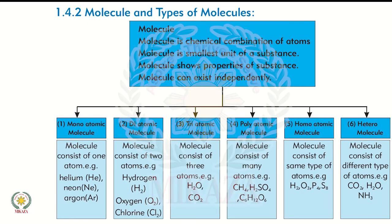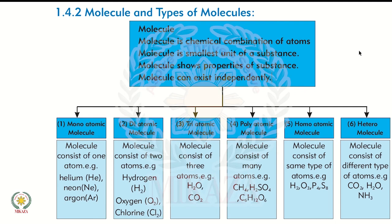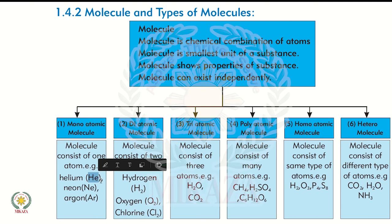Next we have molecules and types of molecules. A molecule is a chemical combination of atoms, the smallest unit of a substance that shows the properties of that substance and can exist independently. Previously we have seen monoatomic, diatomic, and polyatomic molecules, but there are three more types included. Monoatomic molecules contain only one atom — examples are helium (He), neon (Ne), and argon (Ar). These symbols have no subscript number, meaning only one atom exists.